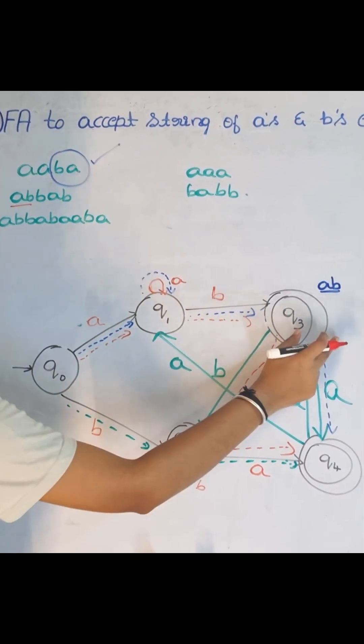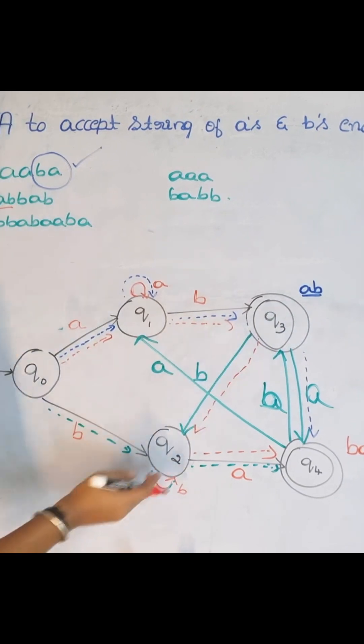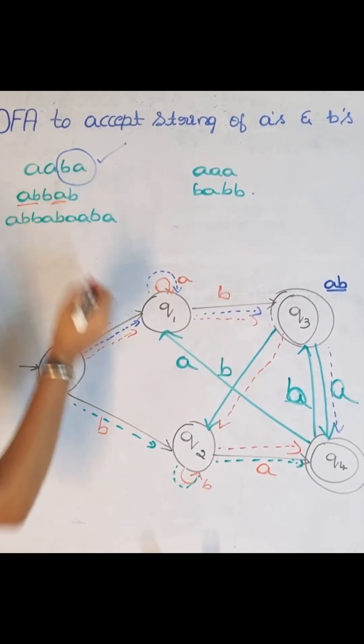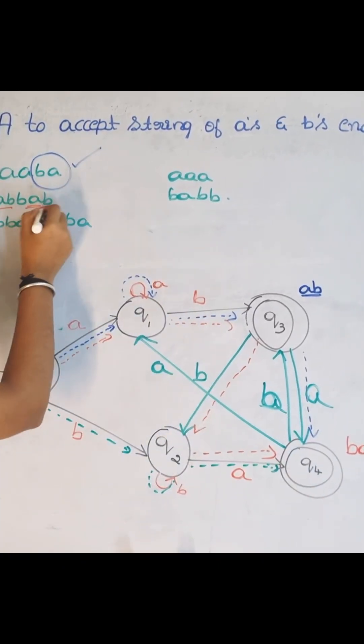On B, it is going to Q3. On B again, it is going to Q2. But here I have A again, so I am moving to Q4. Now I got B.